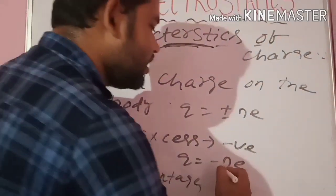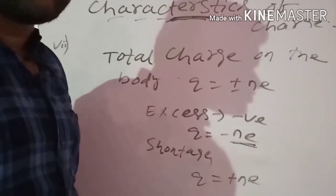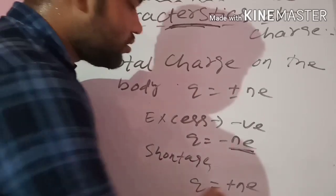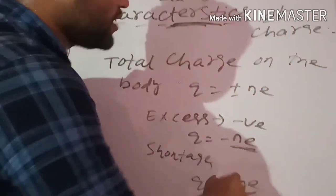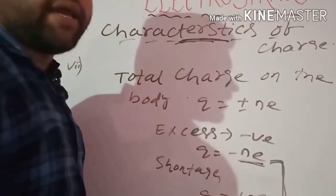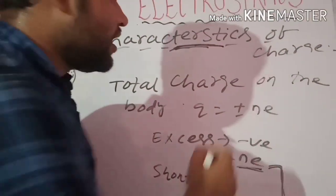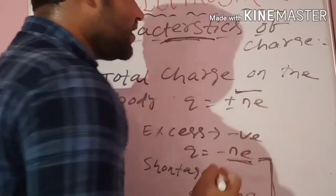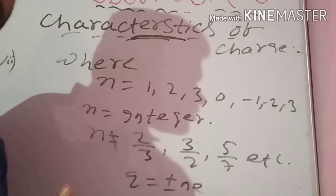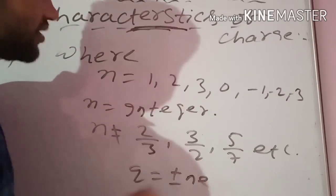Similarly, if a body has n number of shortage electrons, then the body carries a positive charge, q equal to plus n times e. So total body charge is q equal to plus or minus n times e, depending on whether there is a shortage or excess of electrons.